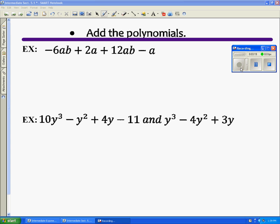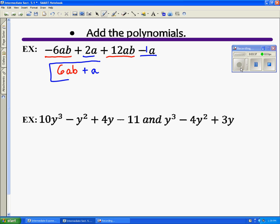Adding polynomials is just like adding like terms. An ab term to an ab term, so I say negative six plus twelve is positive six. Keep the ab. A term, a term, there's a known one there, so that's two minus one is just one a. So we get 6ab plus a.